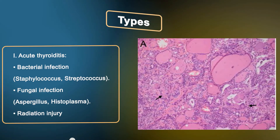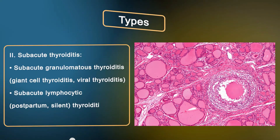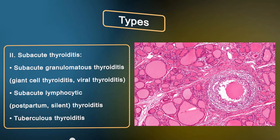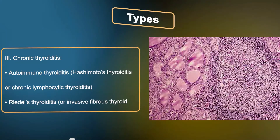Subacute thyroiditis includes subacute granulomatous thyroiditis (also called giant cell thyroiditis or viral thyroiditis), subacute lymphocytic or postpartum silent thyroiditis, and tuberculous thyroiditis. Chronic thyroiditis includes autoimmune thyroiditis such as Hashimoto's thyroiditis (chronic lymphocytic thyroiditis) and Riedel's thyroiditis, also known as invasive fibrous thyroiditis.